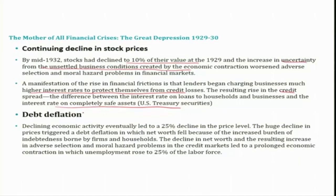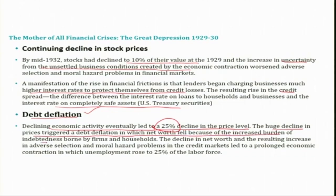This led to a decline in economic activity, which further led to debt deflation. Declining economic activity eventually led to a 25 percentage decline in the price level. Normally we expect moderate inflation, but the economy experienced a 25 percentage decline in prices. Since this was unanticipated, the huge decline in price level triggered debt deflation, in which net worth fell because of the increased burden of indebtedness borne by firms and households. The decline in net worth and the resulting increase in adverse selection and moral hazard problems in the credit market led to prolonged economic contraction, with a sharp decline in GDP and unemployment rising to 25 percentage of the labour force.